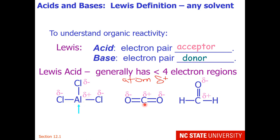If we look at carbon dioxide, the carbon and the oxygens have less than four electron regions, but the carbon is partially positive, so that will be attractive to electrons — making the carbon a Lewis acid in carbon dioxide. For formaldehyde, this carbon also has less than four electron regions (three of them) and is partially positive, so the carbon in formaldehyde is also a Lewis acidic site.